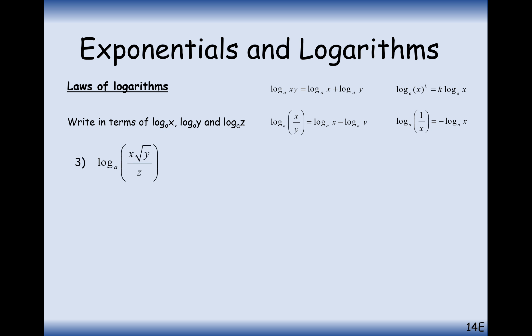Let's look at a more challenging one: log base A of x times root y, all divided by z. We split them up using additions and a negative for the division. For the square root, we treat it as y to the power of a half, then bring the half to the front, giving a half times log base A of y. A nice rule to remember: if you've got half of a log, you can bring it inside as a square root, because that's what it represents as an index.